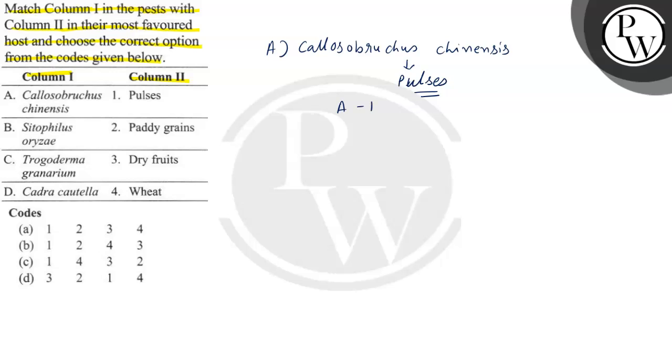What is in B? Sitophilus oryzae. So what will be its host? Paddy grains. So B will be 2.